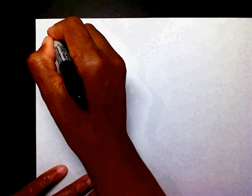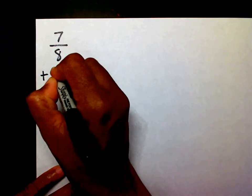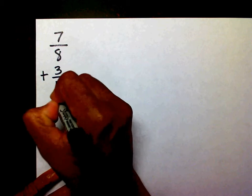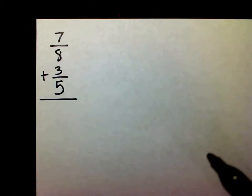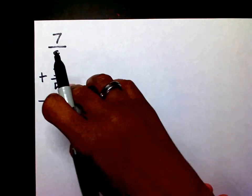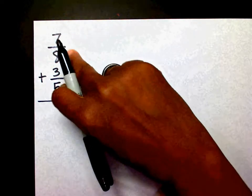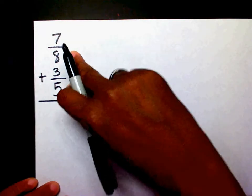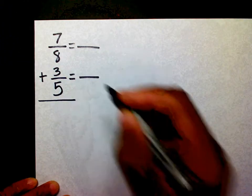I have 7 eighths plus 3 fifths. Whenever you add or subtract fractions, you have to have the same denominator. So 8 is one denominator and 5 is the other denominator. They're not the same, so since they're not the same, I need to get a common denominator — a new denominator.